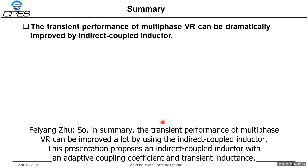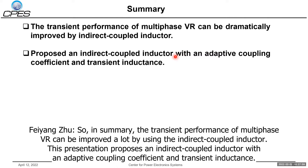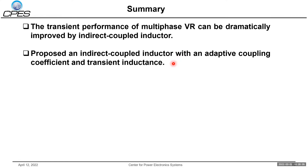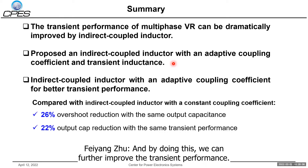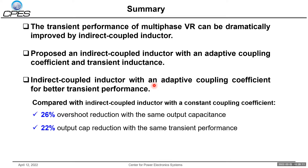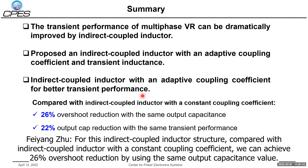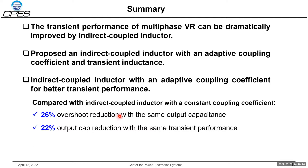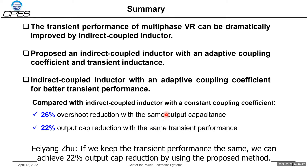In summary, the transient performance of multiphase VR can be improved significantly by using the indirect coupling structure. This work proposes an indirect coupling structure with an adaptive coupling coefficient and transient inductance, which further improves the transient performance. Compared with the indirect coupling structure with a constant coupling coefficient, we achieve 26% overshoot reduction with the same output capacitance value, and 22% output capacitance reduction if we keep the transient performance the same.